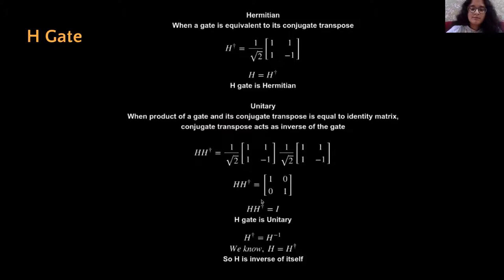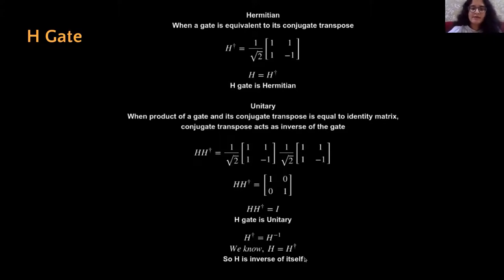Since H times some other matrix gives the identity I, that other matrix is H inverse. Here, H dagger or H conjugate transpose is H inverse. Because the Hermitian property is satisfied by H gate, H is the inverse of itself, which means if we apply H twice in a row there will be a null effect. So if we had a qubit in ket0 and apply H gate we get ket plus, and applying H gate again returns us to ket0.